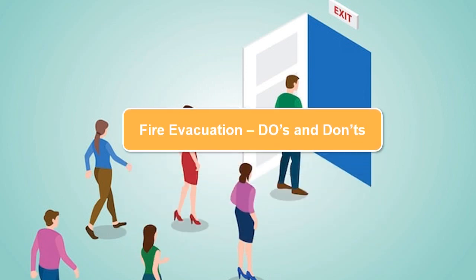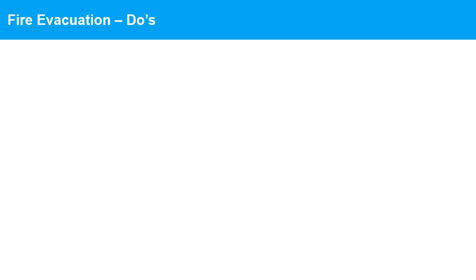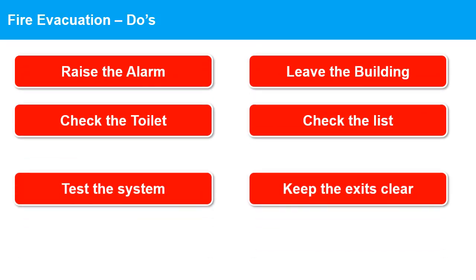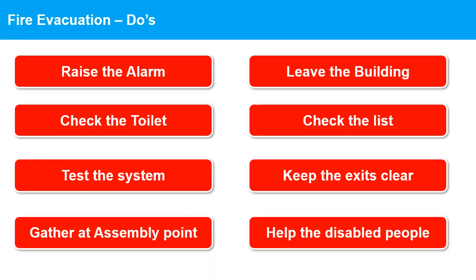Guidelines for evacuating during a fire — what to do: 1. Raise the alarm. 2. Leave the building. 3. Check the toilet. 4. Check the list. 5. Test the system. 6. Keep the exits clear. 7. Gather at the assembly point. 8. Help disabled people.